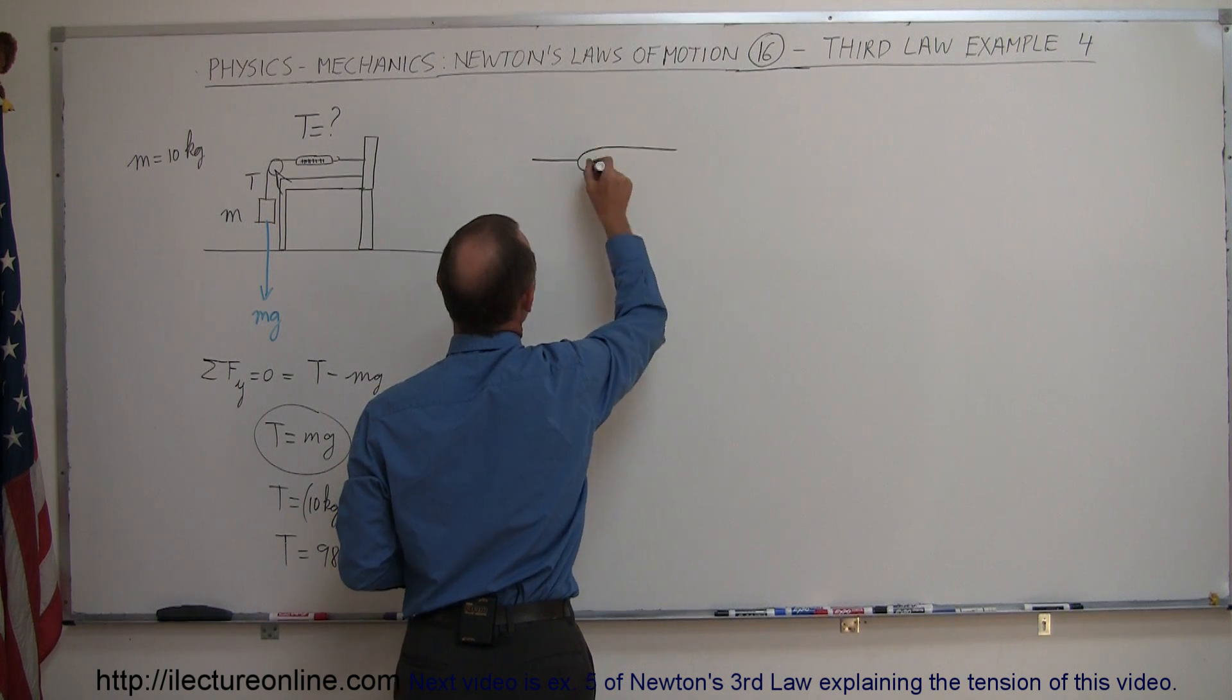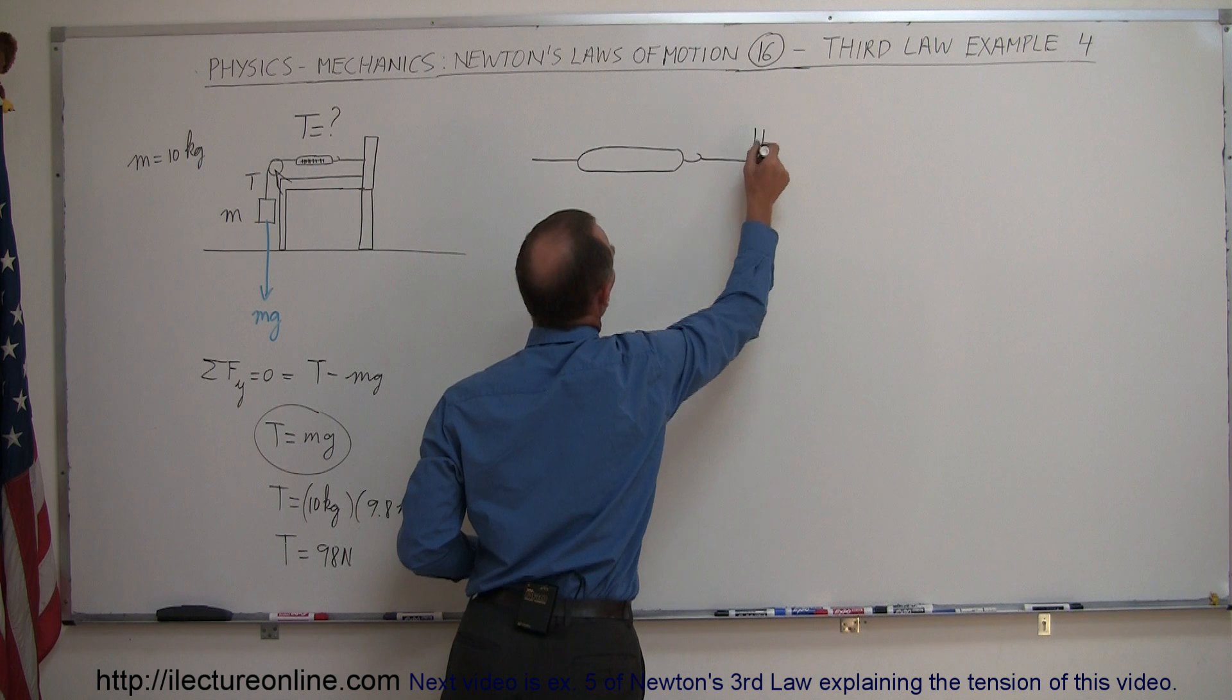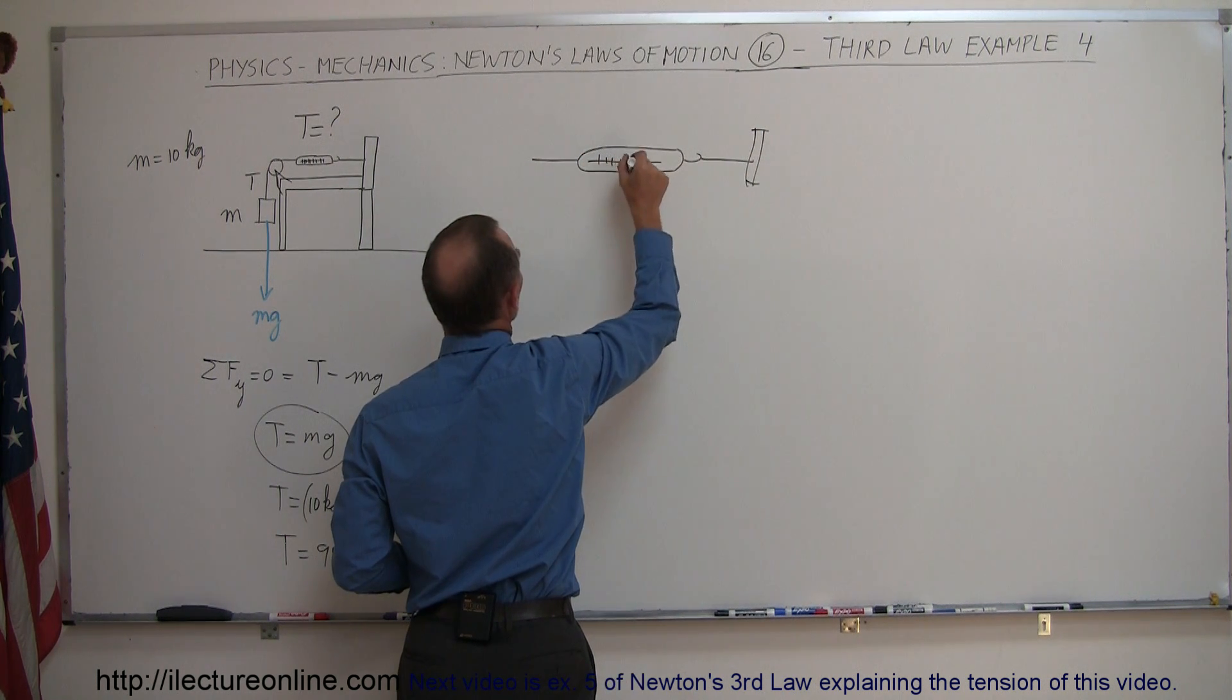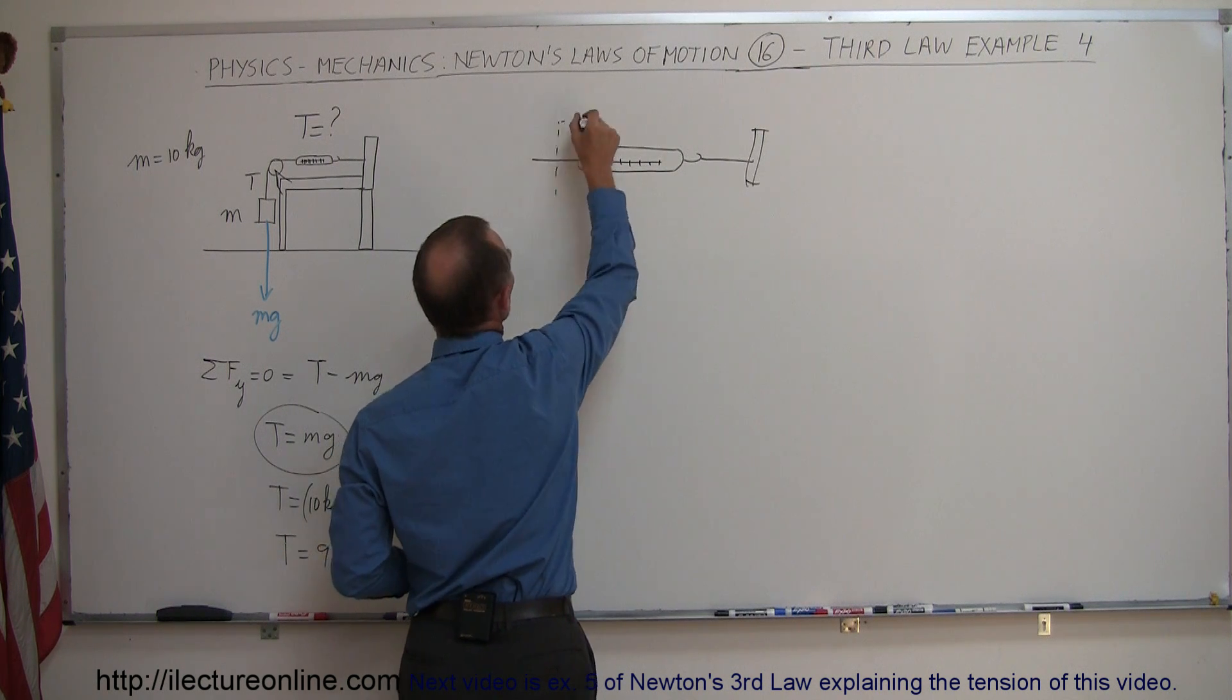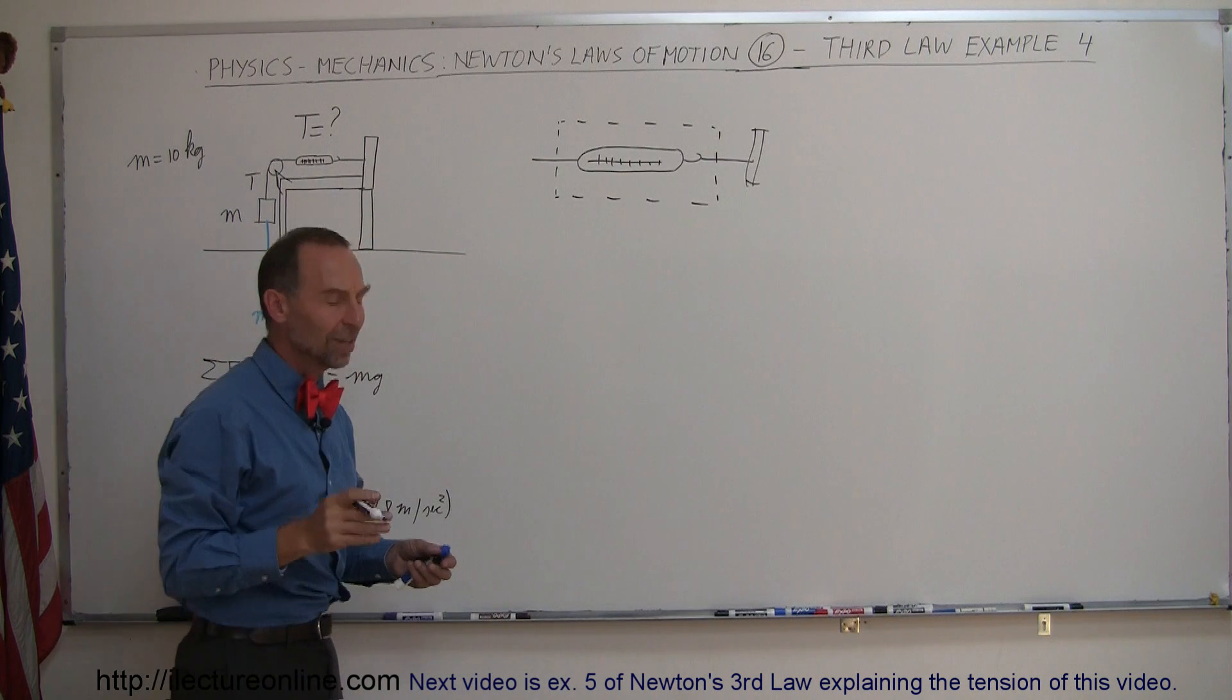So here's the scale, here's the hook, here's the string, here's the wall, and so here's the scale reading. We go ahead and draw a free body diagram here. What should we see?